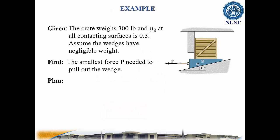Considering this example, the crate weighs 300 pounds and the coefficient of static friction at all contacting surfaces is 0.3, assuming the wedges have negligible weight. It is required to find the smallest force P needed to pull out the wedge.